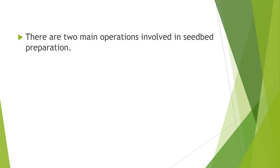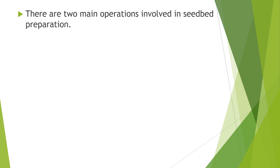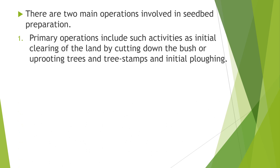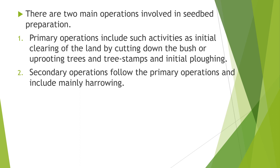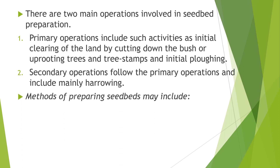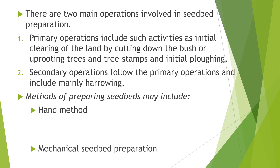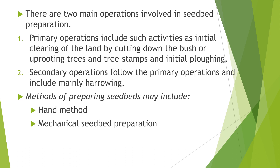There are two main operations involved in seed bed preparation. Primary operations include initial clearing of the land by cutting down the bush, uprooting trees and tree stumps, and initial plowing. Secondary operations follow the primary operations and include mainly harrowing. Methods of preparing seed beds may include the hand method, mechanical seed bed preparation, and ox cultivation.